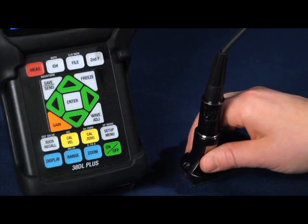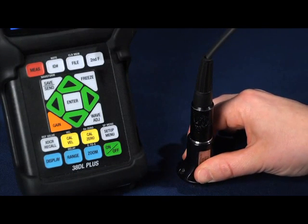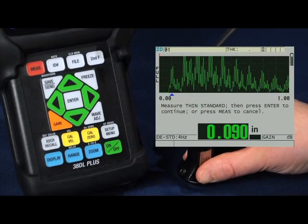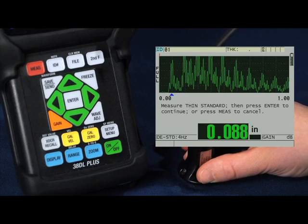Now you can proceed to your thin standard, the hundred thousandths step. Couple onto your thin standard and press the cal zero key. Once you have a steady reading, press the enter key.